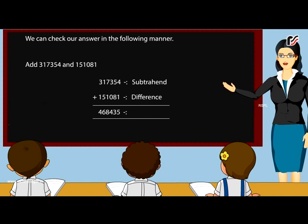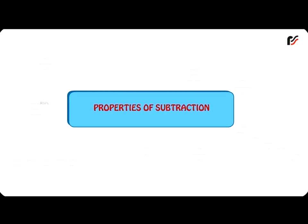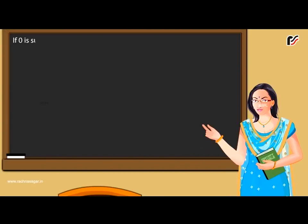our answer is correct. Properties of subtraction: If 0 is subtracted from a number, the difference is the number itself. For example, 6789 minus 0 equals 6789.